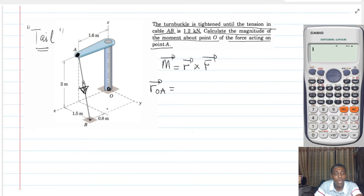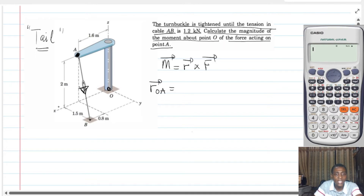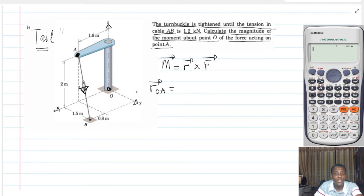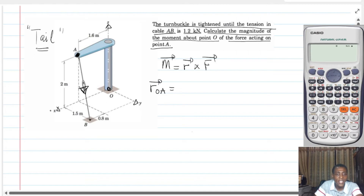But we cannot just work like that; we have to first assign a convention. The convention is such that positive along X, positive along Y, positive along Z. So if you see me walking in this direction it is positive, this direction also positive, and this direction also positive. If I walk against the direction shown, it is negative. Similarly, the unit vector along X is I, along Y is J, and along Z is K.